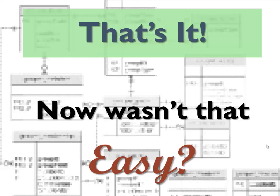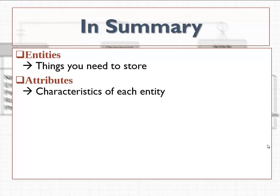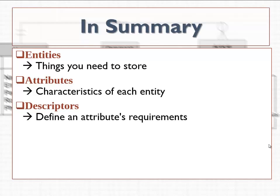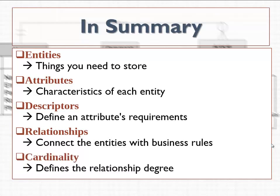Now that's it — that was easy, wasn't it? There's not much really to it. But to summarize: entities represent the things you need to store — these are boxes in your diagram. Attributes represent the characteristics of each entity — the attributes go inside the entity's box. Descriptors define the attribute requirements — these might be required, unique, multi-valued, or derived. Relationships are the business rules that connect the entities together. And finally, cardinality defines the degree of the relationship, such as one-to-one, one-to-many, or many-to-many.